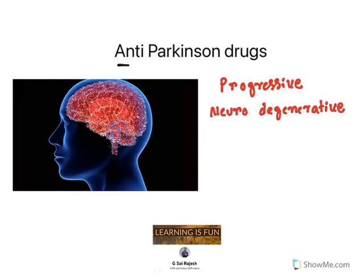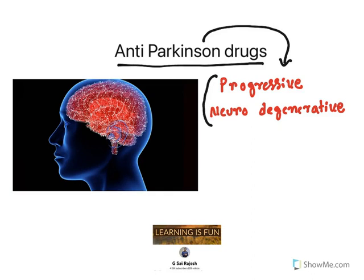Hello everyone, welcome to the video on anti-Parkinson drugs. Now let us understand what you mean by Parkinson's disease. Parkinson's disease is a progressive neurodegenerative disease. It is also known as old age disease. When people age, neurodegeneration occurs, and it is progressive — that means with aging, the neurodegeneration increases.